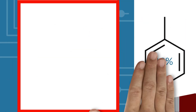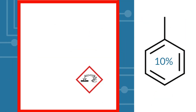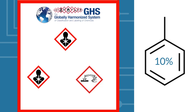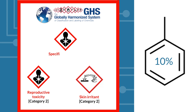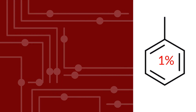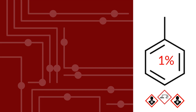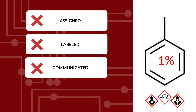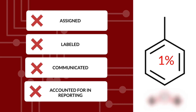The 10% toluene solution would be properly classified for the following chemical hazards in accordance with GHS thresholds: Skin irritant category 2, Reproductive toxicity category 2, and Specific target organ toxicity repeated exposure category 2. Working with the incorrect value of 1%, none of these hazards would be assigned, labeled, communicated with your team, or accounted for in reporting.